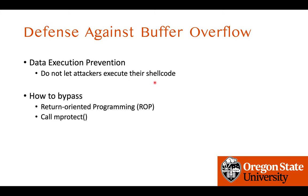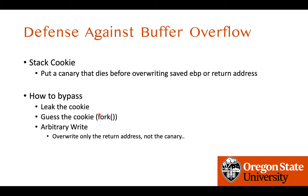However, attackers can easily bypass DEP by launching return-oriented programming (ROP), and using that, attackers can even call mprotect. We practiced this in one of the week six challenges — you can add executable privilege on a writable memory page and then execute shellcode. So DEP raises the bar, but skilled hackers trained with ROPs, like you, can easily bypass it.